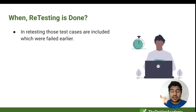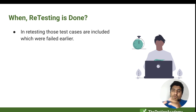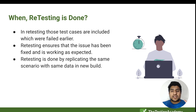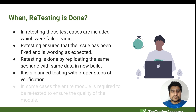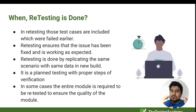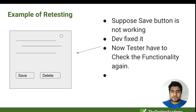In retesting, only those test cases are included which were failed earlier. For example, if you are testing a calculator and 2 plus 2 failed, you need to re-run that test case rather than running other functionality, because the bug was in that specific calculation. Retesting ensures that the issue has been fixed, and it is done by replicating the same steps used earlier to produce that bug. It is planned testing with proper steps.